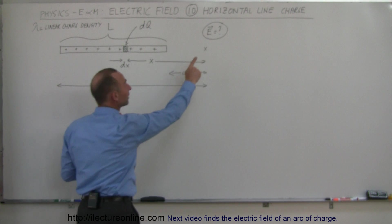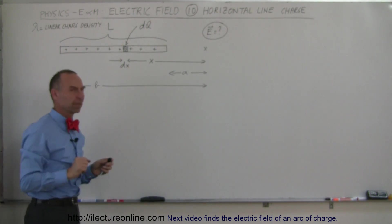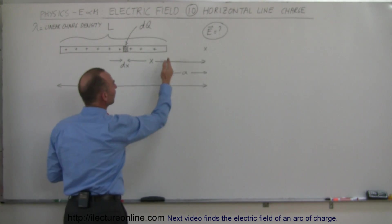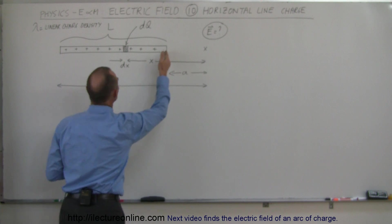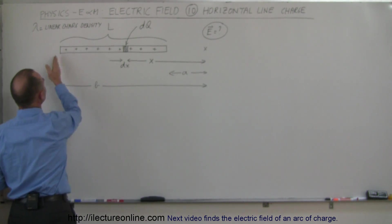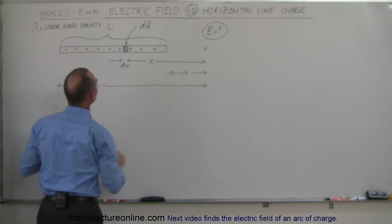And we're trying to find the electric field at this location right there. A distance A away from the beginning of the line charge, and a distance B away from the end of the line charge, the line charge being length L.